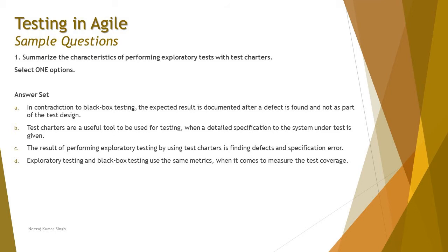Option A: in contradiction to black box testing, the expected result is documented after the defect is found and not as a part of the test design. When you talk about when a defect is found, it is obviously documented. The expected result here works another way around. But this says in contradiction to black box testing — let's look at the other options before we finally conclude.